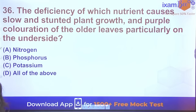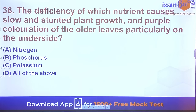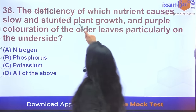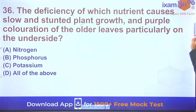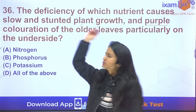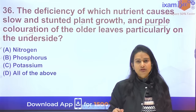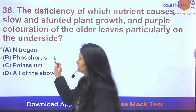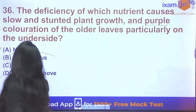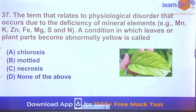Question 36: Deficiency of which nutrient causes slow and stunted plant growth and purple coloration? Purple coloration specifically occurs in phosphorus deficiency. Nitrogen deficiency also causes stunted growth but purple coloration is characteristic only of phosphorus deficiency.